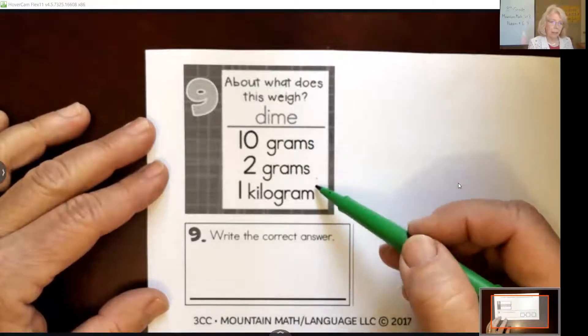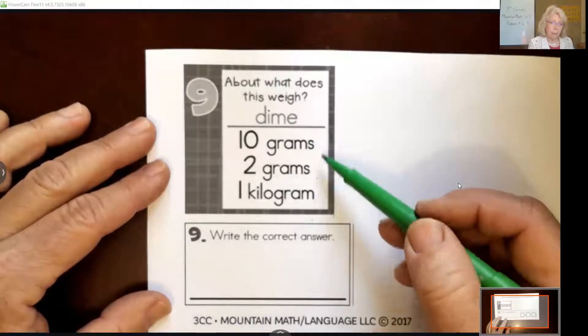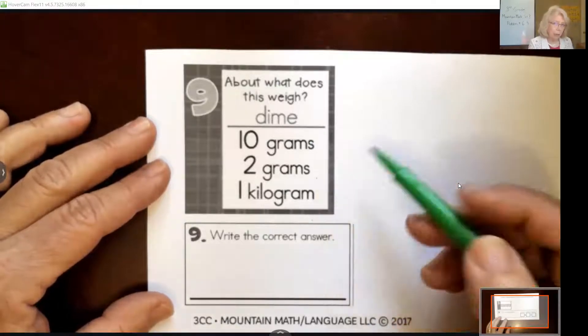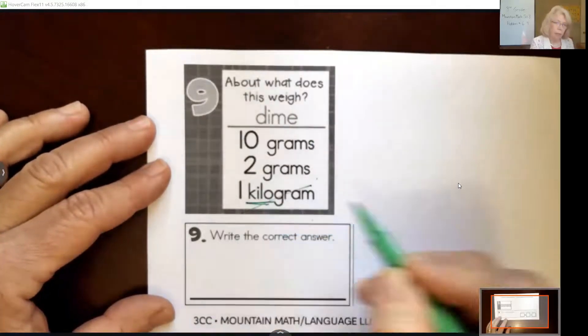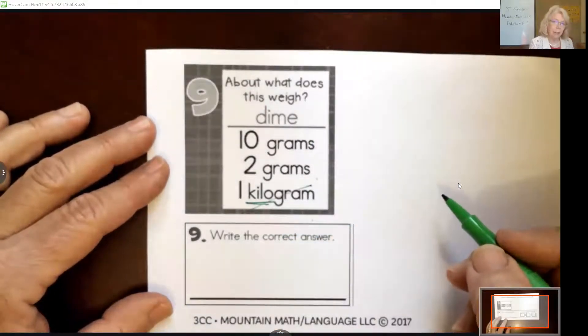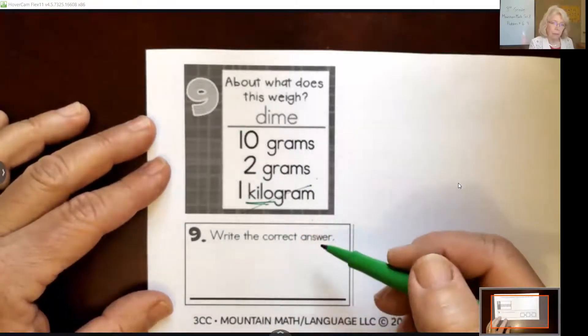So this is a hard one if you haven't yet studied these weight measurements, but we could probably eliminate at least one, which is this one, because kilo means a thousand times bigger. So that would be pretty big of whatever these weights are.